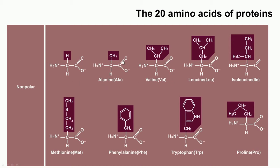You have an H group — that gives glycine. You have a CH3 group — that becomes alanine. You have CH2-CH3-CH3 — that becomes valine, and so on. All of these are non-polar R groups and are grouped together accordingly. Counting the number of amino acids: 9 of the 20 are amino acids with non-polar R groups.